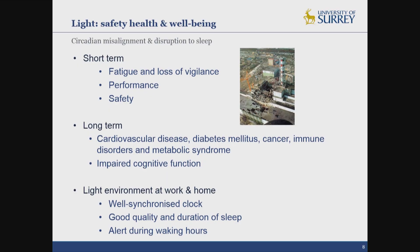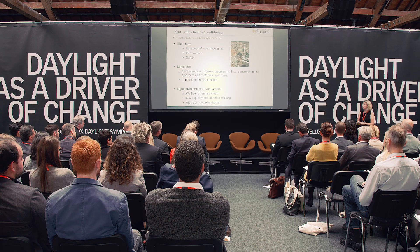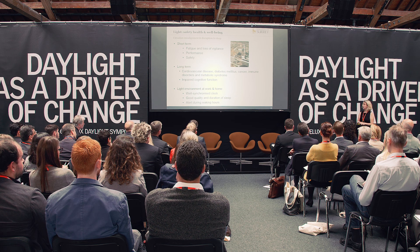Why is light so important when thinking about health and well-being? Circadian misalignment — those situations when the clock is inappropriately aligned with local time — can cause disruption to sleep. As a society, we are also chronically sleep-deprived. In the short term, we feel very fatigued, have reduced levels of performance, and there is an impact on our safety. One well-known example is that the nuclear disaster at Chernobyl happened at 3 in the morning when night shift workers were at their lowest level of alertness, with severe safety consequences.